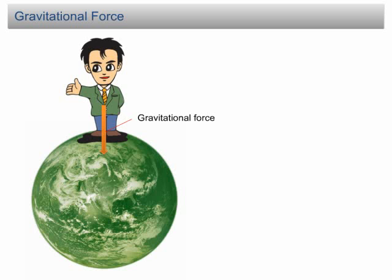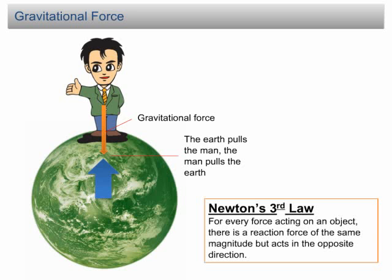According to Newton's third law, when the Earth pulls the man towards it, a reaction force will be produced of the same magnitude but acting in the opposite direction, pulling the Earth towards the man. So it ends up that the Earth pulls the man, and the man pulls the Earth.